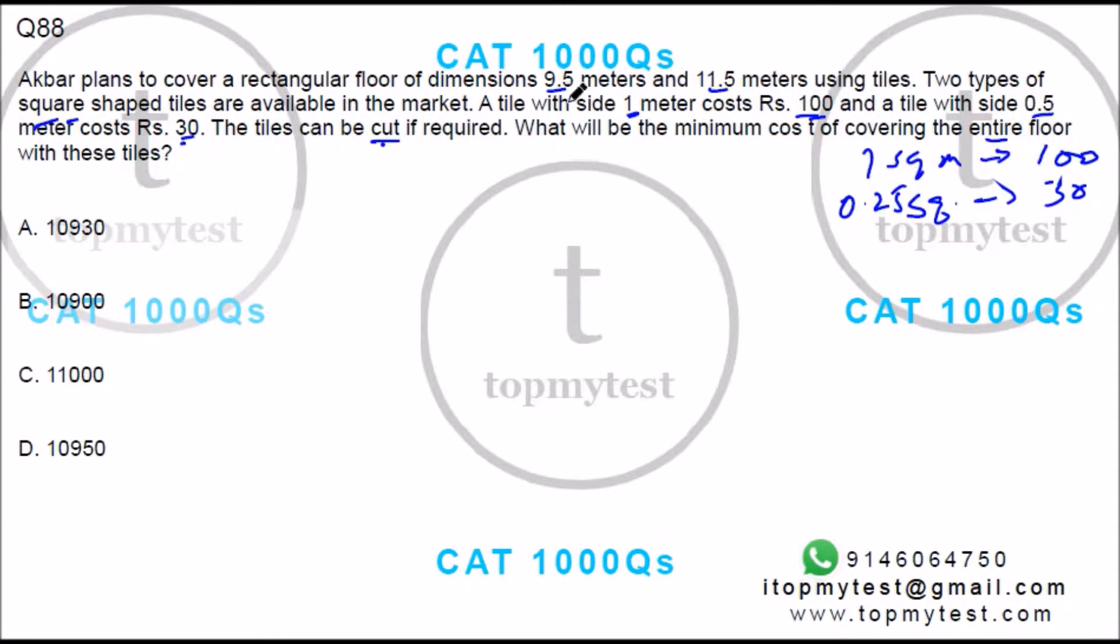Okay, so total area to be covered is 9.5 into 11.5. I can do it as (10 minus 0.5) into (12 minus 0.5). This will give me 120 minus 6 plus 5, which is 11, plus 0.25. So this will be 109 plus 0.25.